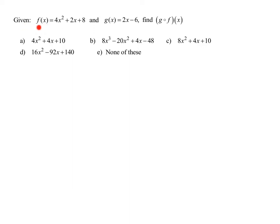In this problem, we're given f of x is 4x squared plus 2x plus 8, and g of x is 2x minus 6. We have to find g composed with f of x.